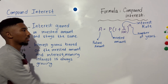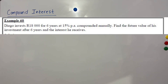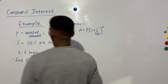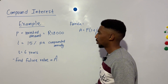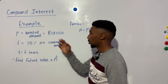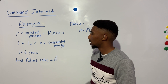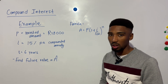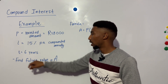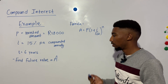Now let's look at an example. Diego invests 18,000 rand for six years at 15 percent per annum, compounded annually. Find the future value of his investment after six years and the interest he receives. So P is the invested amount which is 18,000 rand, i is 15 percent per annum meaning per year, compounded annually, and the time is six years. We need to find the future value.